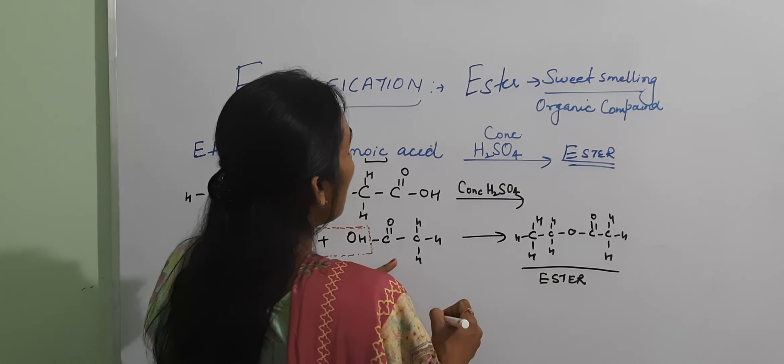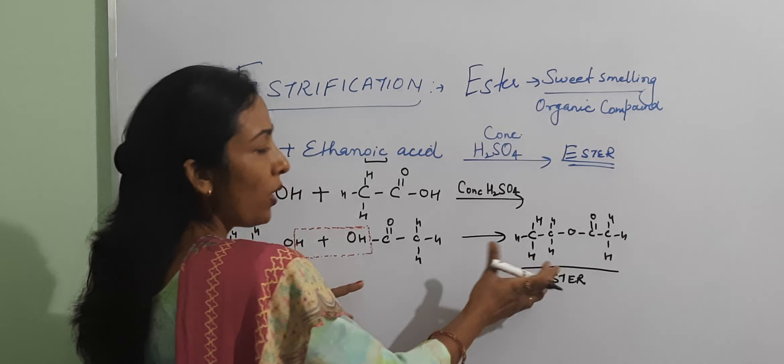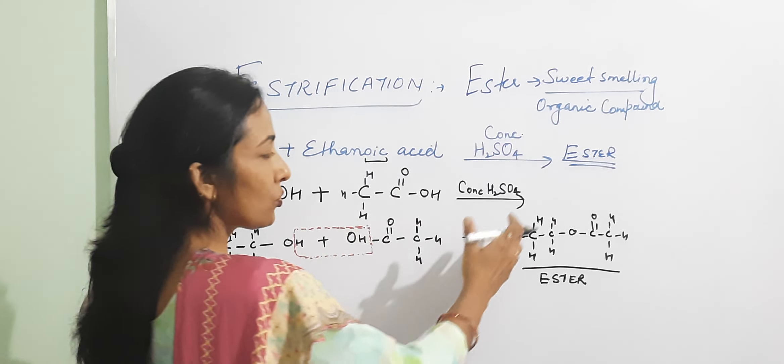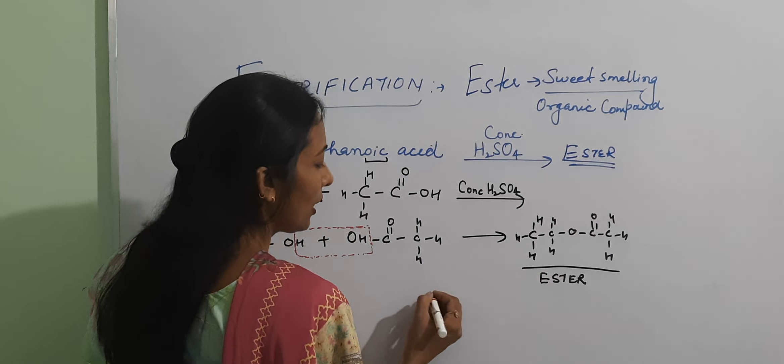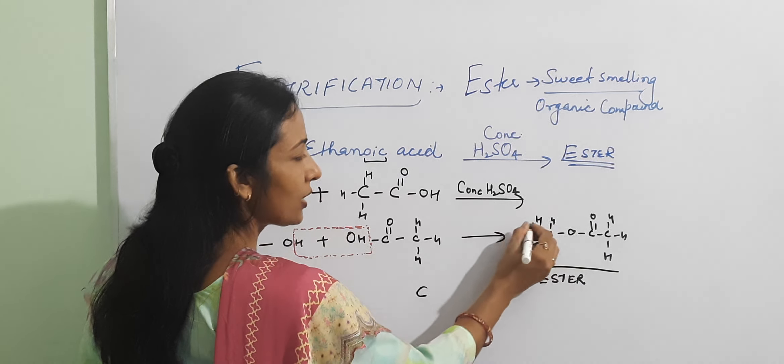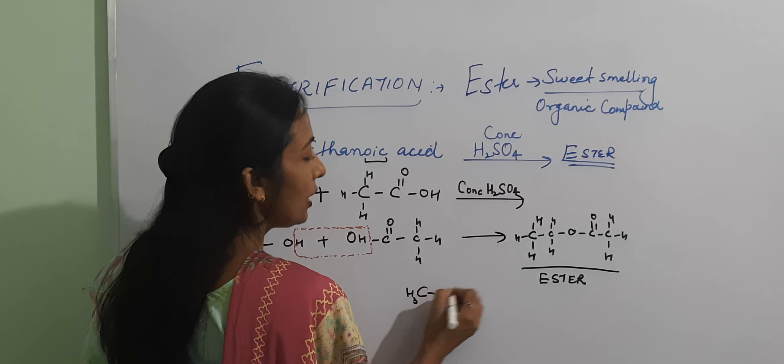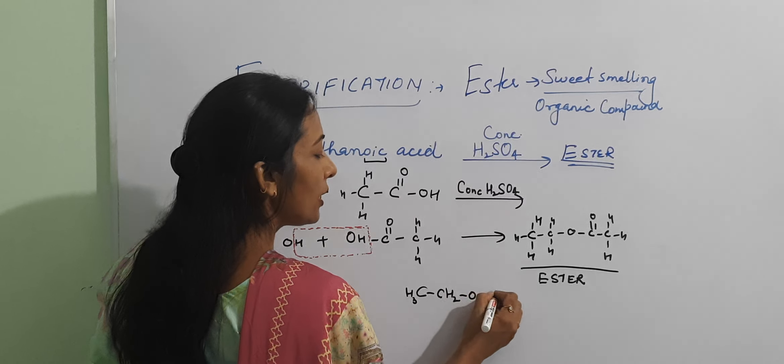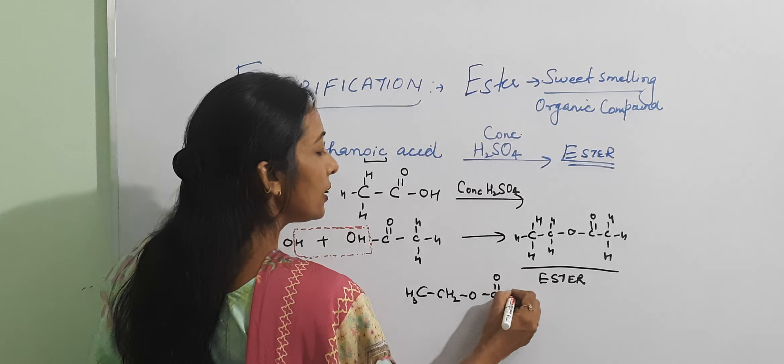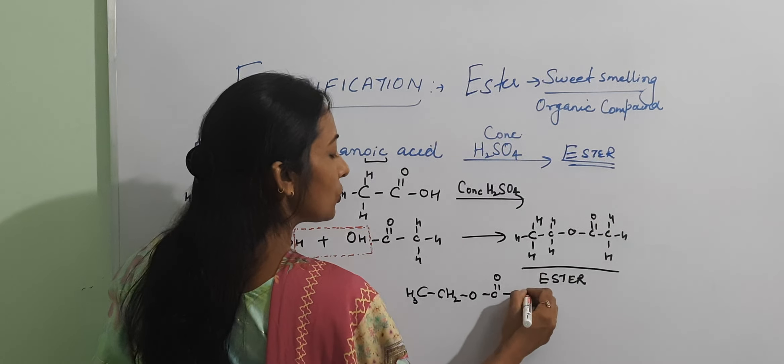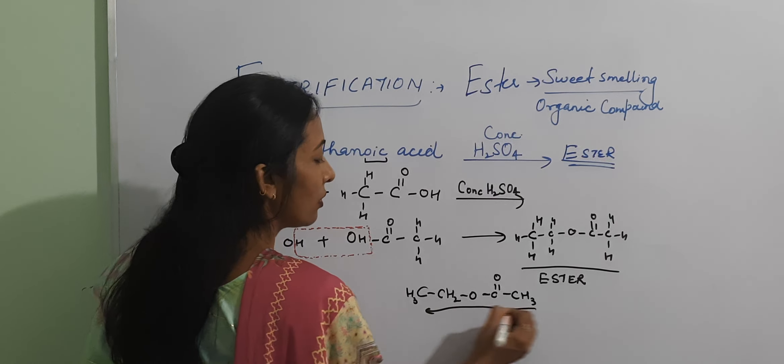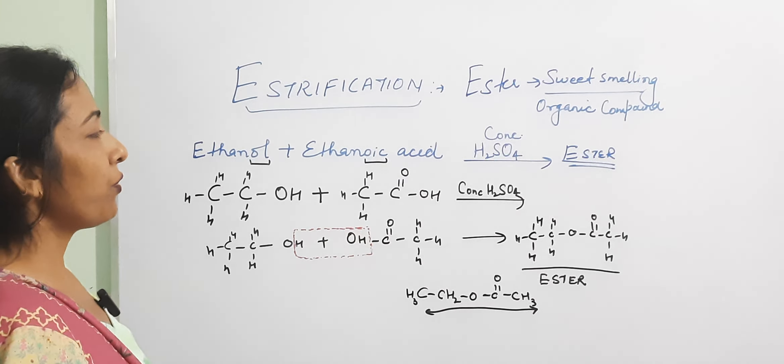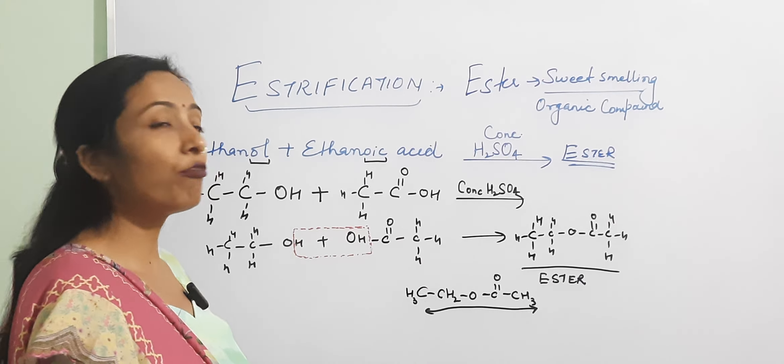What is expanded form? You can write this. C how much is it? H, H. C how much is it? H, H. O, then C, O, then 1, 2, 3. C, H, H. This is the sweet-smelling organic compound which gives the sweet smell of our perfumes and the flavoring agents.